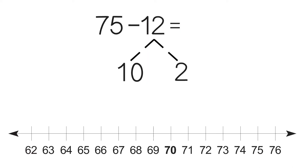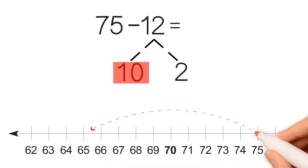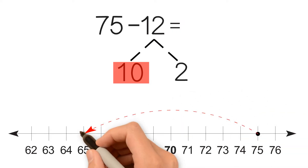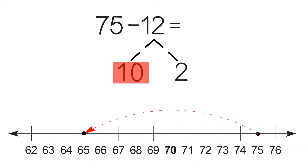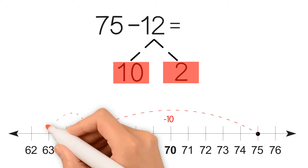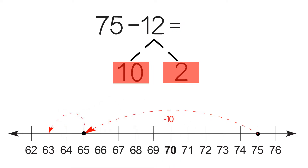On the number line, we highlight 75 and we subtract 10, because that's the first number. 75 minus 10 equals 65. Then we take the second number: 65 minus 2 equals 63. 75 minus 12 is equal to 63.